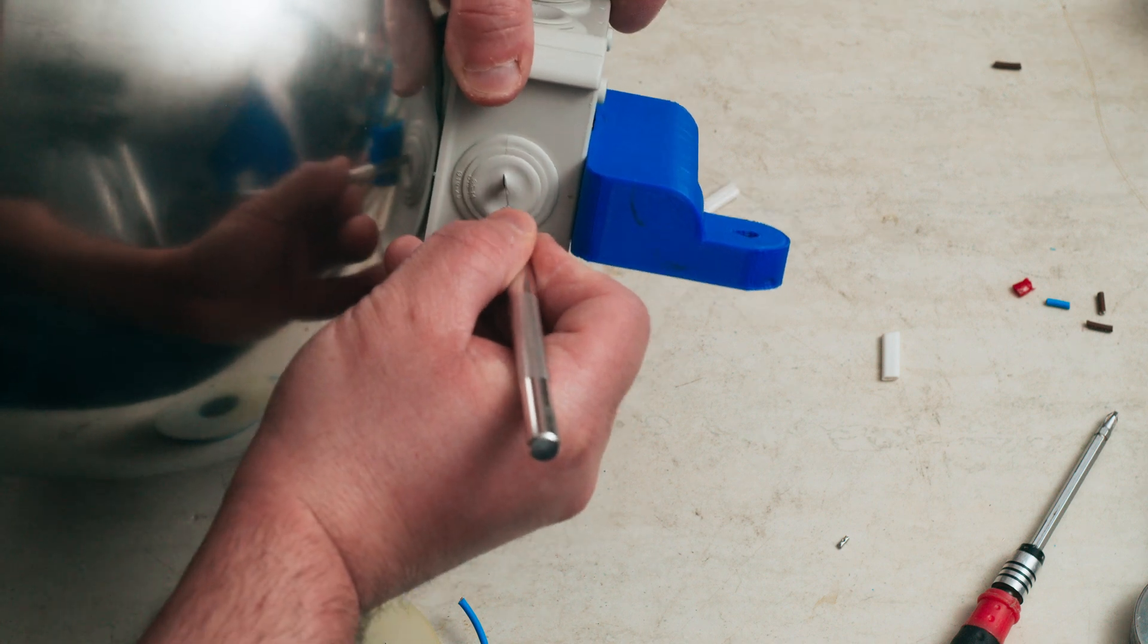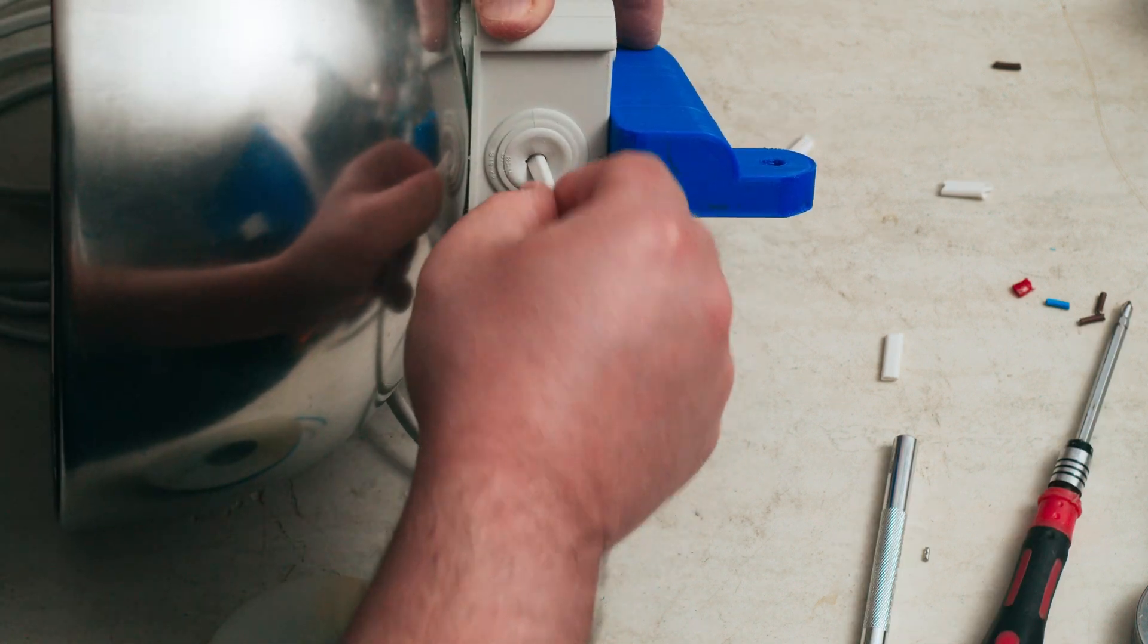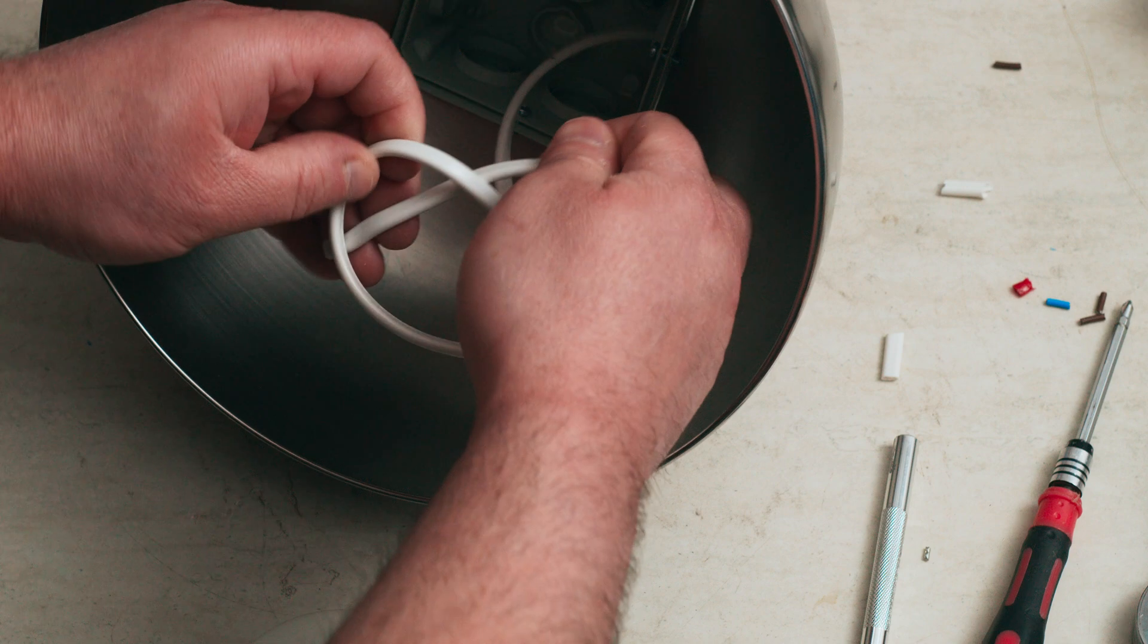Gently cut a hole in the junction box for the power cable to go in. Pull the cable through and make a knot.